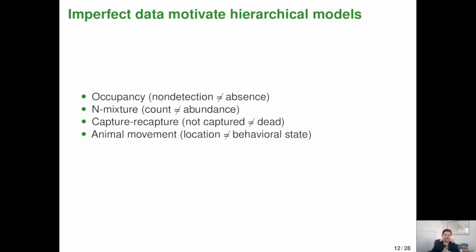It's often the case that hierarchical models are developed because data are imperfect. So occupancy models are an example where non-detection doesn't imply absence. An N-mixture model is motivated by the fact that count observations that you make are not the same thing as abundance. Capture-recapture. If you don't capture something, it doesn't mean it's dead. For animal movement models, where something is doesn't tell you the behavioral state. So these are all examples of hierarchical models that are motivated by imperfect data.